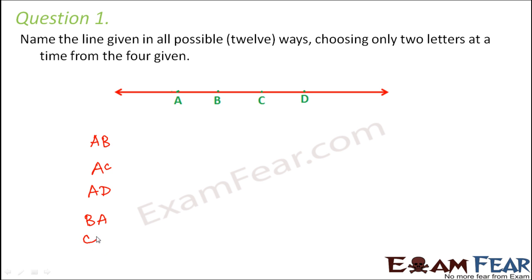So in a similar way AB and BA these are two different names even though they mean the same thing. Similarly you can say CA, similarly DA. In a similar way you can also name it as BC, BD, CB, DB. You can also name it as CD or DC.